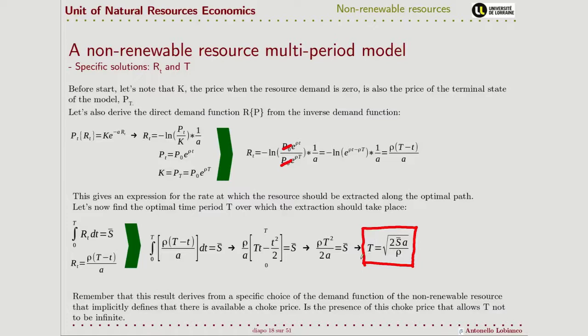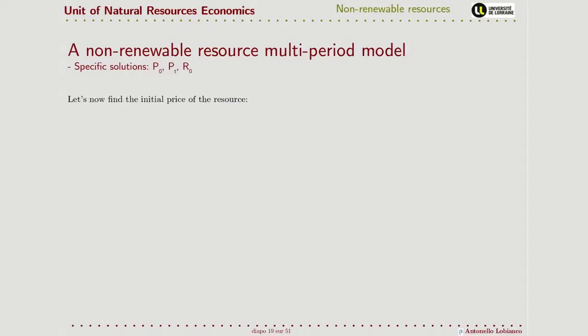We can speak of a finite final moment in time precisely because we have K — a choke price at which demand is driven to zero. It is the fact that the price does not go to infinity when the demanded quantity of the resource goes to zero that allows us to have a finite final moment in time in our model.